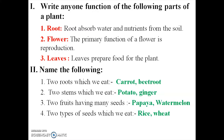Any two roots which we eat: carrot and beetroot. Other examples include radish and turnip. These roots are modified into vegetables. Spell the words: carrot - C-A-R-R-O-T, beetroot - B-E-E-T-R-O-O-T.